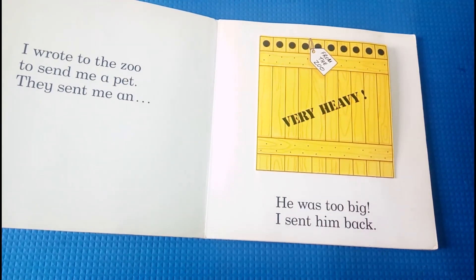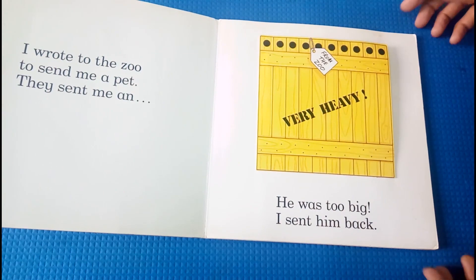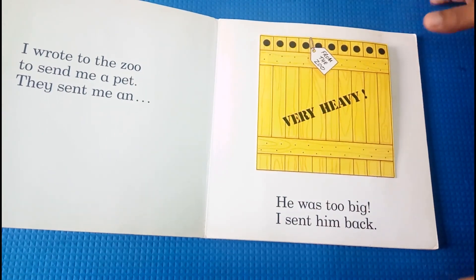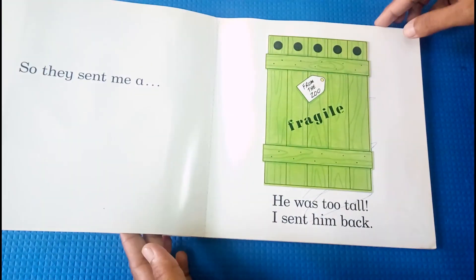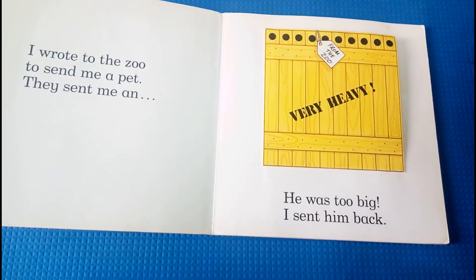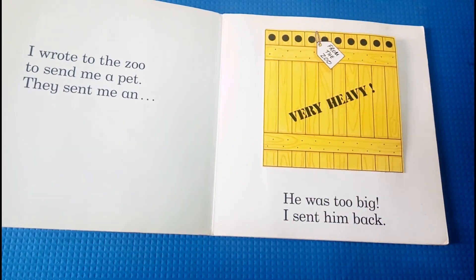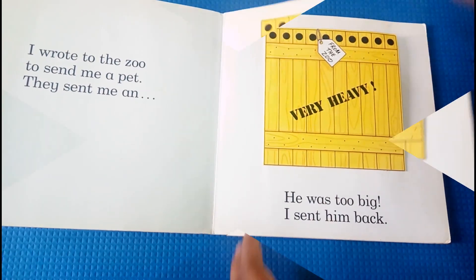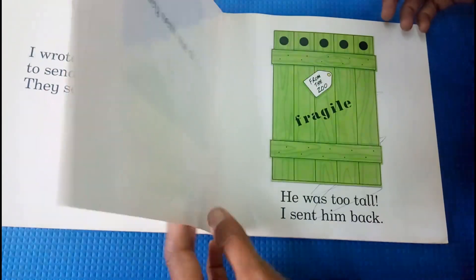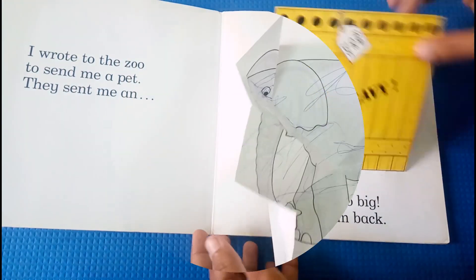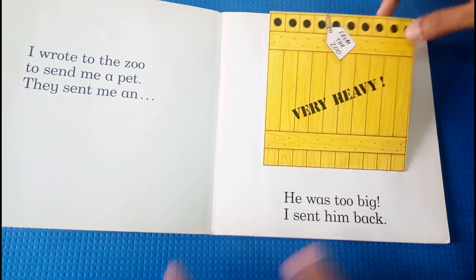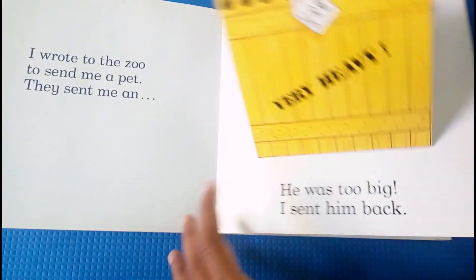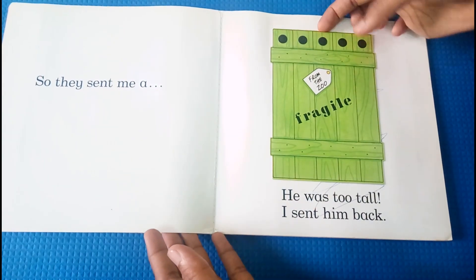This book is a huge book. If you look at each page, you can lift a flap. In the first page, this elephant is a big elephant. It's too big, so you can't be satisfied with each animal.